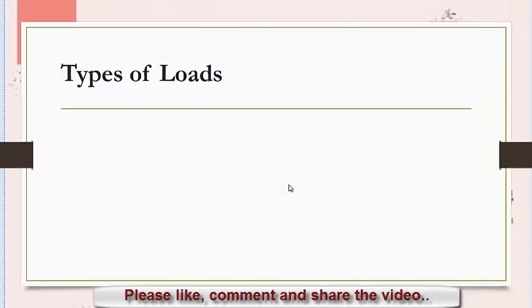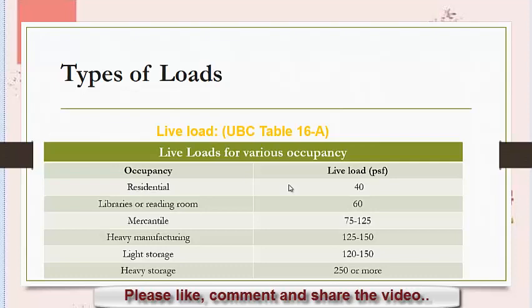According to UBC, Uniform Building Code, live loads can be estimated from the published table. For different occupancy, different live loads are given by UBC 97. For residential buildings, we can take 40 psf. For libraries, we can take 60. For mercantile buildings, we can take 75 to 125 psf. For heavy manufacturing, it is 125 to 150. For light storage, it is 120 to 150. And for heavy storage, it is 250 or more than 250.